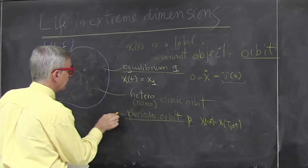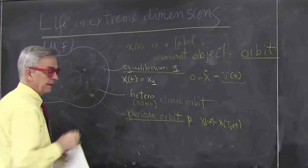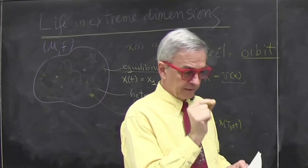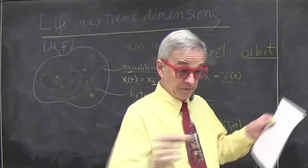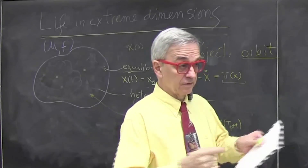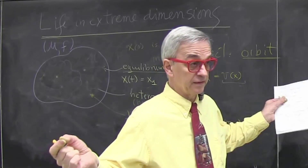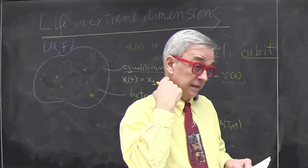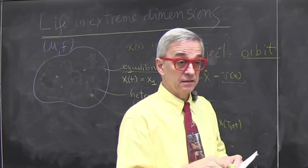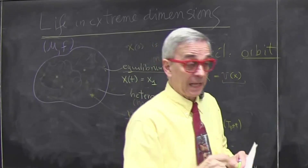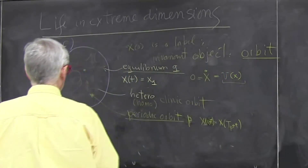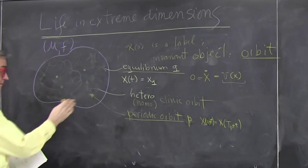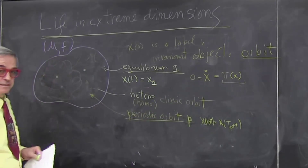These periodic orbits, however, are really needles in the haystack. It turns out that typically you have to specify the initial 100,000-number state with arbitrary precision — 10 to the 11 digits, 10 to the 114 digits — and the trajectory, if you can find it, will come back with some error. So they're there. The amazing thing we'll learn about them is that there are infinitely many, and they get harder and harder to find.